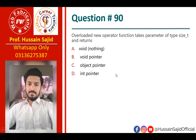The overloaded `new` operator function takes a parameter of type `size_t` and returns a void pointer. So the new operator function takes `size_t` as its parameter and returns void pointer.